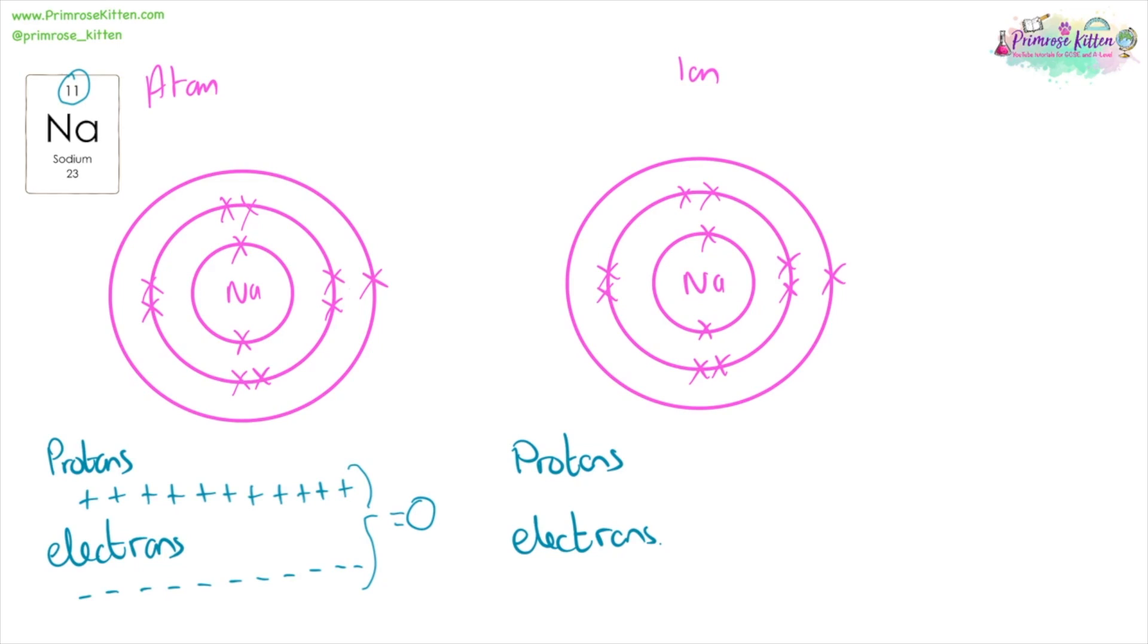However, when sodium makes an ion, this electron here goes away. So it still has the same number of protons. It's still sodium, 11 protons. But it's lost an electron, so it only has 10 electrons. So it has one more proton than it has an electron. Meaning this is going to have an overall positive charge.